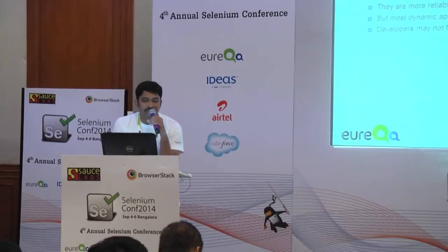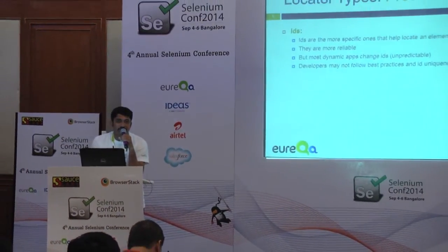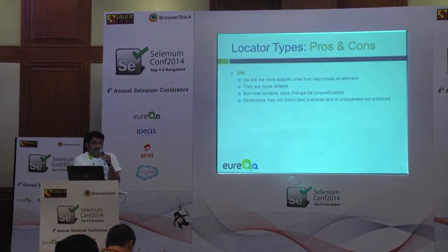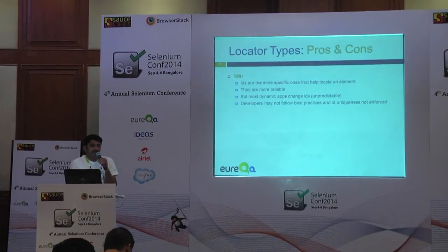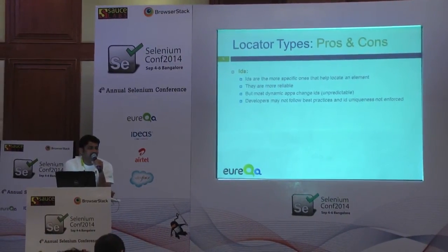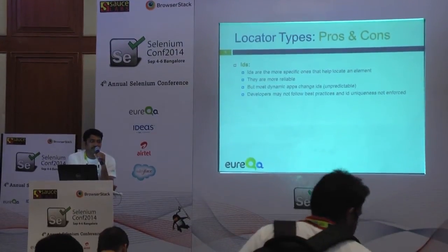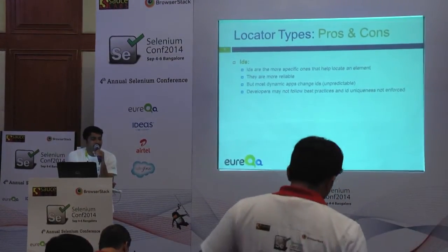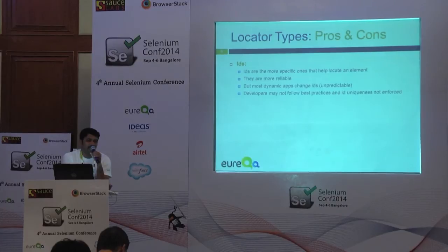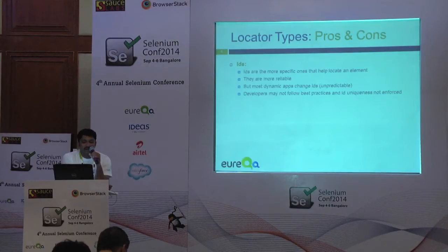Let's have a quick look at the pros and cons of a couple of locators. The first one is ID — it's the most specific one that can help locate an element on a page, and they are more reliable. As long as the developer doesn't change the ID of an element, it is not going to change. But the downside is it doesn't ensure that the ID is unique on the page — it depends on the discipline of the developers, and if they don't follow best practices, it may fail.